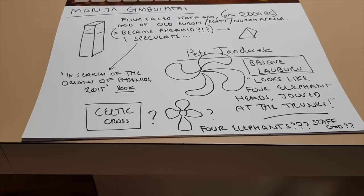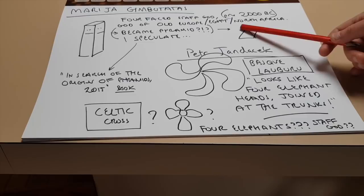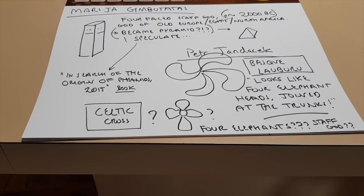So Maria Gimbutas, a very famous and very neglected prehistorian, identified something in prehistoric Europe that is pre-2000 BC called the Staff God. Basically a four-faced stick. And old Europe is not just Europe, but she drew it on her map as including Egypt and North Africa. And the fact it included Egypt, North Egypt, gave me the clue about the pyramids.